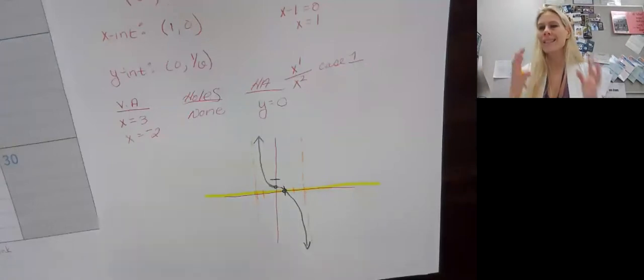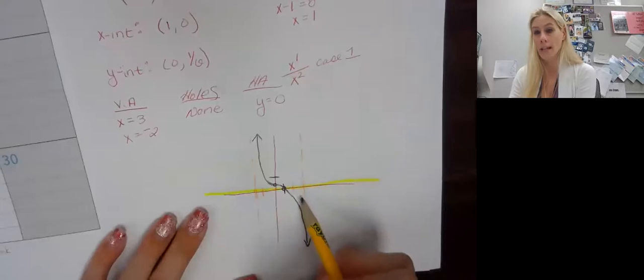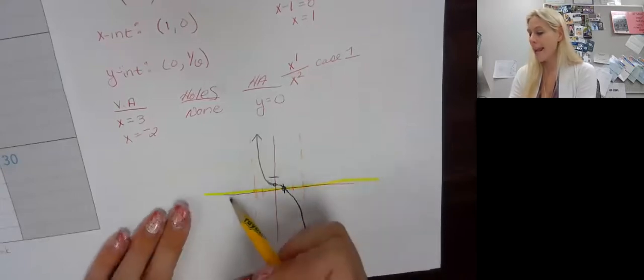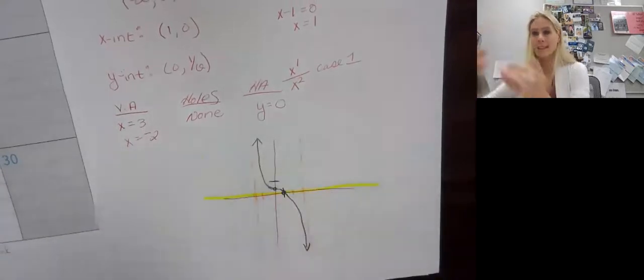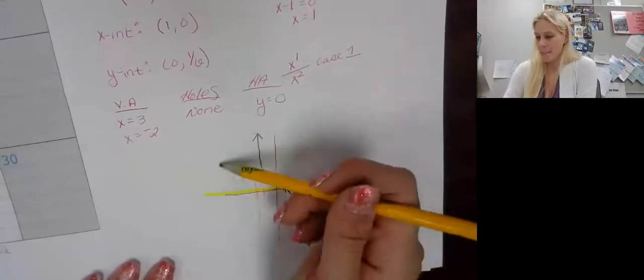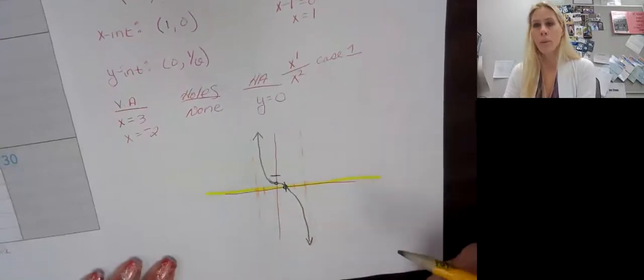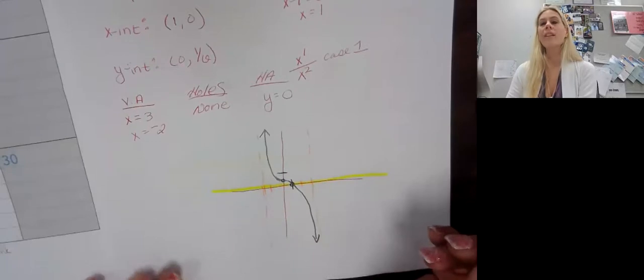Now, I had mentioned last class, horizontal asymptotes, we always think about an asymptote can't cross. But with horizontal, it doesn't matter about the middle. It matters what happens on the end. So we can definitely cross this horizontal asymptote right here. It can't cross at the end; it means it follows it.